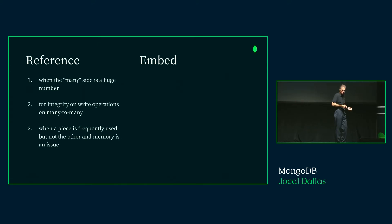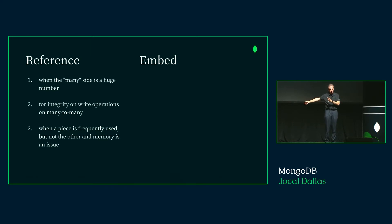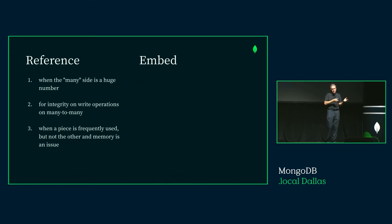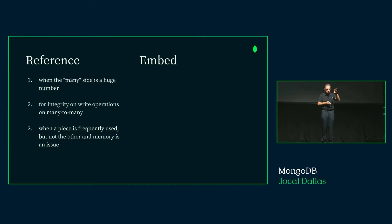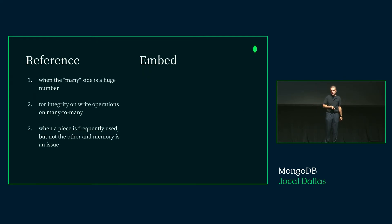When would you reference? When the many side is a huge number — if you have 10 million followers, you don't want to embed that in your main document. Also for write integrity on many-to-many relationships where you need to write to two places and don't want duplication — you can use a transaction in MongoDB. And when you have a large piece of information where only a small part is accessed all the time, splitting it even in a one-to-one relationship is a good case for referencing.